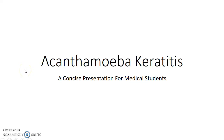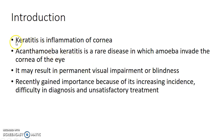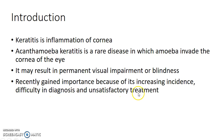Hello, this is Indian Medico. In this video we are going to see about Acanthamoeba keratitis — a concise presentation for medical students. Keratitis is inflammation of the cornea, so Acanthamoeba keratitis refers to the inflammation of the cornea caused by Acanthamoeba. It is a rare disease in which amoeba invade the cornea of the eye and may result in permanent visual impairment or blindness if not treated properly. It has recently gained importance because of its increasing incidence, difficulty in diagnosis, and unsatisfactory treatment.